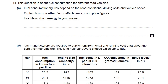Question 13 from the OCR Gateway Physics P3 section of their specimen paper. This question is about fuel consumption for different road vehicles. Fuel consumption figures depend upon road conditions, driving style and vehicle speed. Explain how one other factor affects fuel consumption figures, and it's got to be an idea about energy.